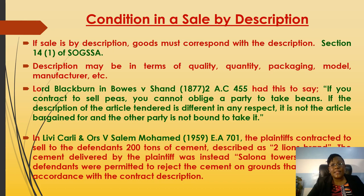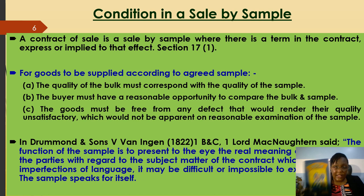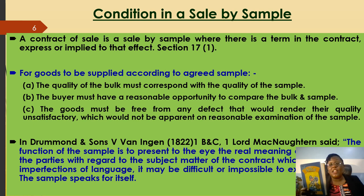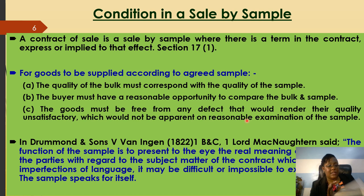In a sale by sample, the law says that if I give you a sample of what I want, you must supply me exactly that sample. For example, if I show you this children's bible and tell you I want 50 bibles like this, you are supposed to supply me 50 exact bibles matching this sample — the pages, number of pages, colors, everything must correspond. The quality of the bulk must correspond to the sample; I must be given a reasonable opportunity to inspect and compare, and the goods must be free from any defect visible to the naked eye.